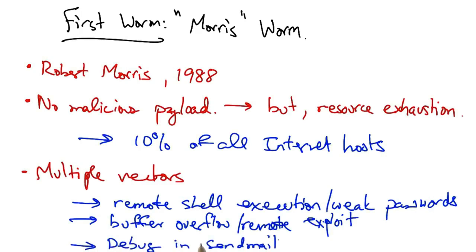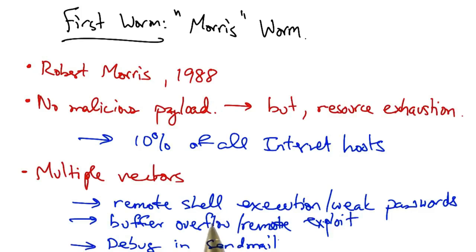The third way that the worm spread was via the debug command in SendMail, which is a mail sending service. In early SendMail versions, it was possible to execute a command on a remote machine by sending an SMTP message. The worm used this capability to spread automatically.